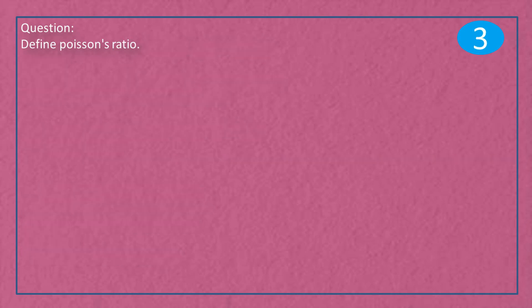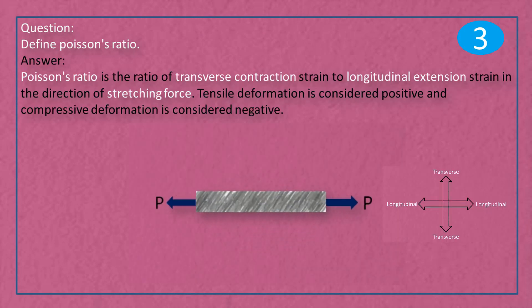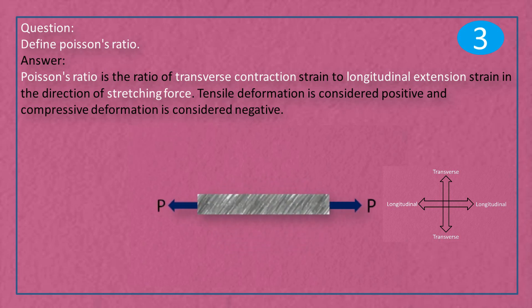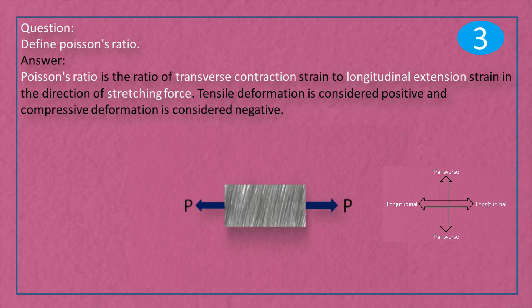Question: Define Poisson's ratio. Answer: Poisson's ratio is the ratio of transverse contraction strain to longitudinal extension strain. In the direction of stretching force, tensile deformation is considered positive and compressive deformation is considered negative.